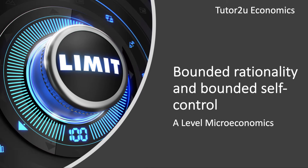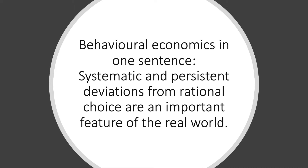Welcome to a short video on behavioural economics. It's really interesting to see how many times bounded rationality and bounded self-control are appearing in answers to questions, so I thought I'd spend a couple of minutes exploring the difference between the two. Behavioural economics looks for examples of people making decisions in ways which deviate from those predicted by the rational choice model. In one sentence: systematic and persistent deviations from rational choice are an important feature of the real world.